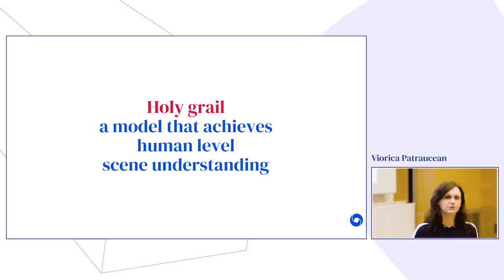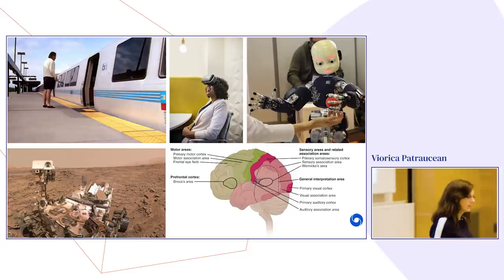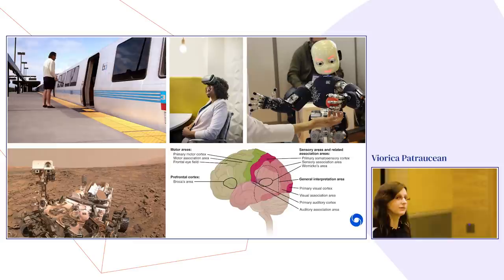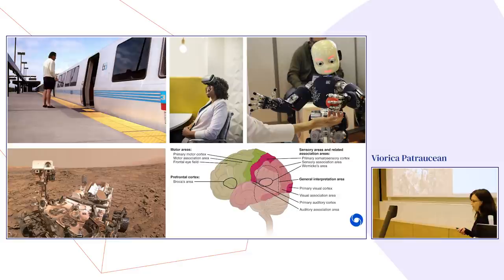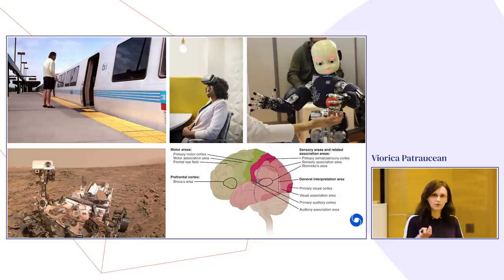The holy grail in computer vision is to train a system that achieves human-level scene understanding. If we have that, a large number of applications become available — helping visually impaired people navigate environments, virtual and augmented reality, robotics, and autonomous vehicles. I also believe that advancing research in designing such a system will give us a better understanding of our brain and how our visual system works.